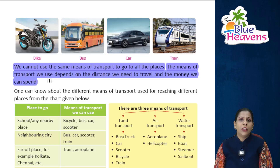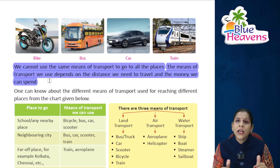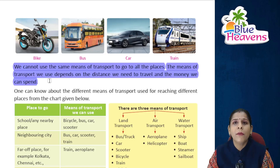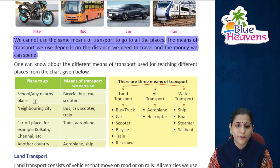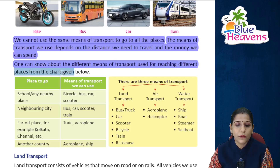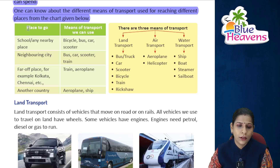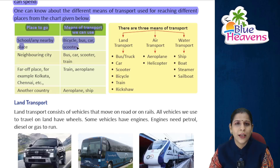If we have to travel anywhere, the first thing we consider is which transport to use and how much distance we have to cover. One can know about the different means of transport used for reaching different places from the chart given below. For going to school, we can use a bicycle, bus, car, or scooter.